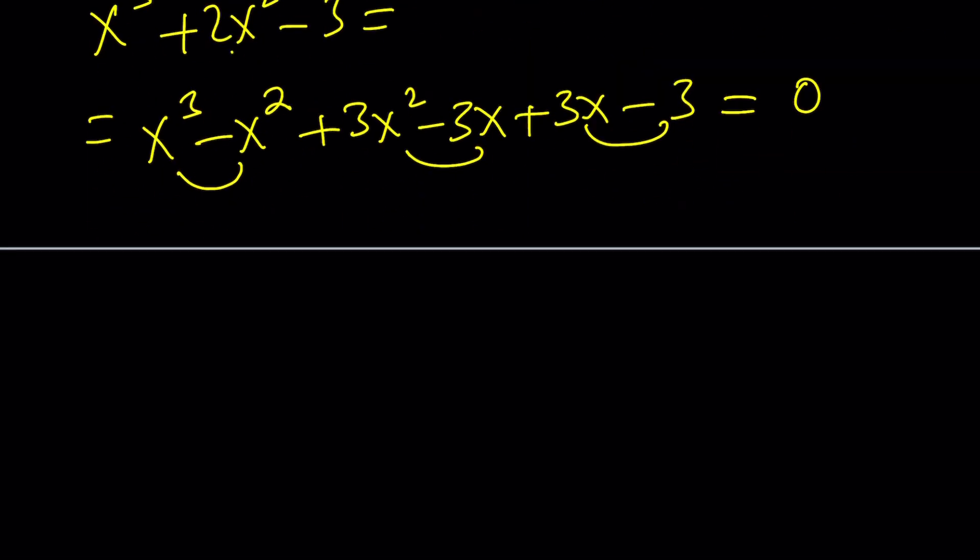And now, it's going to be x squared times x minus 1, 3x times x minus 1, and 3 times x minus 1 equals 0. And from here, if you take out an x minus 1.